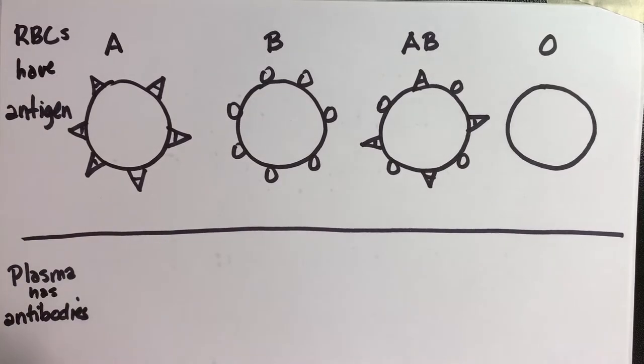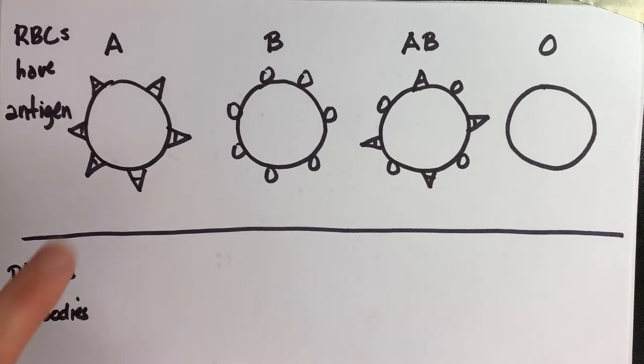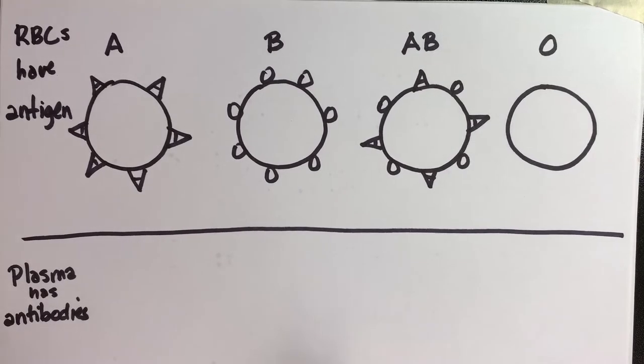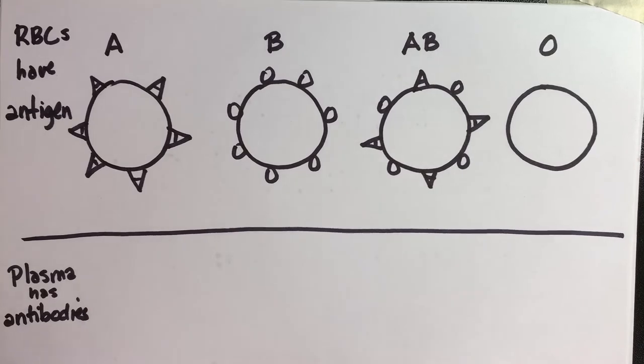So red blood cells have antigens and plasma has antibodies. Right, now an antibody is there to protect you in case the wrong type of red blood cell is introduced into your body. And the wrong type meaning something that doesn't match one of yours or isn't otherwise compatible. I'm also leaving off the Rh factor for right now. We'll do that at the end. So this is just straight up A, B, AB, and O. We'll get the idea that red blood cells have antigens, plasma has antibodies.